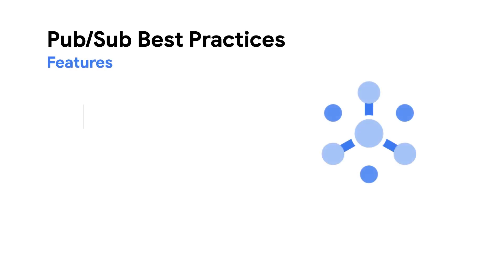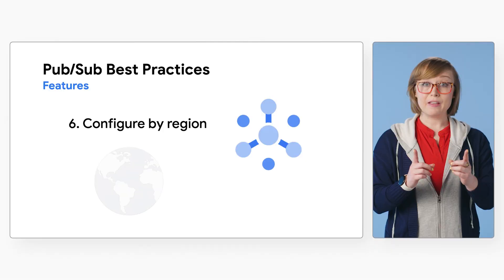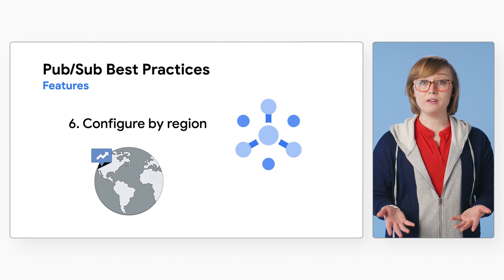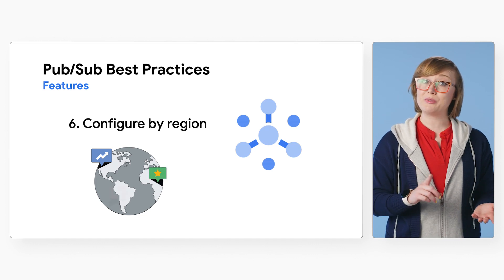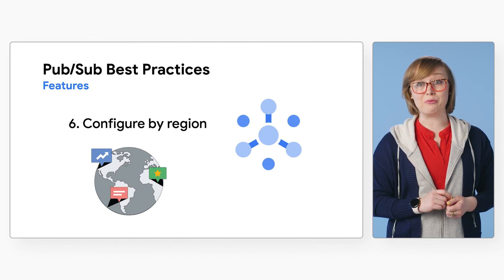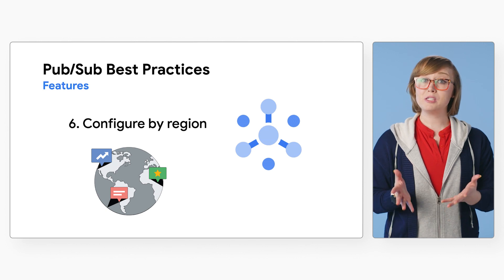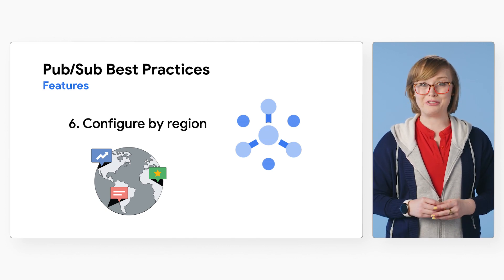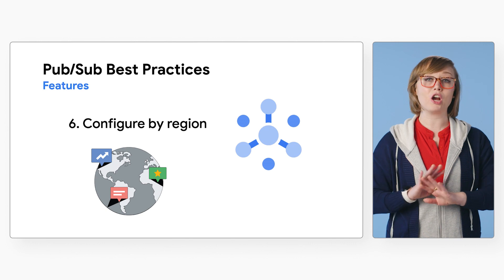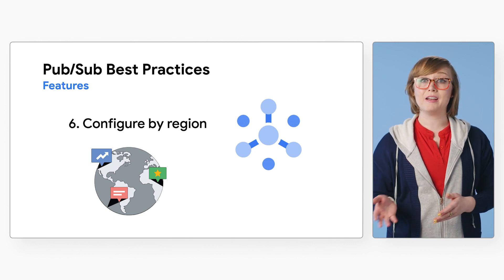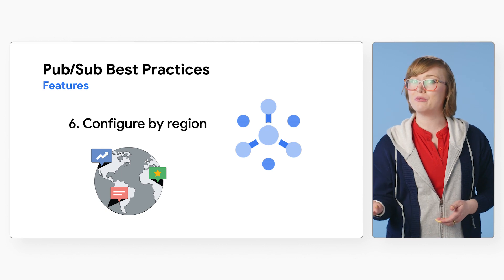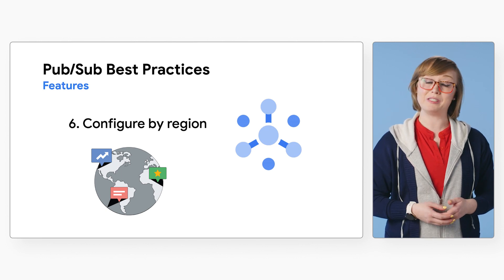Number six: configure by region. If you have data residency requirements, you can configure Cloud PubSub to only store messages in certain allowed regions. PubSub's topic message storage policy offers a way to ensure that messages published to a topic are never persisted outside of a set of Google Cloud regions you specify, regardless of where the published requests originate.